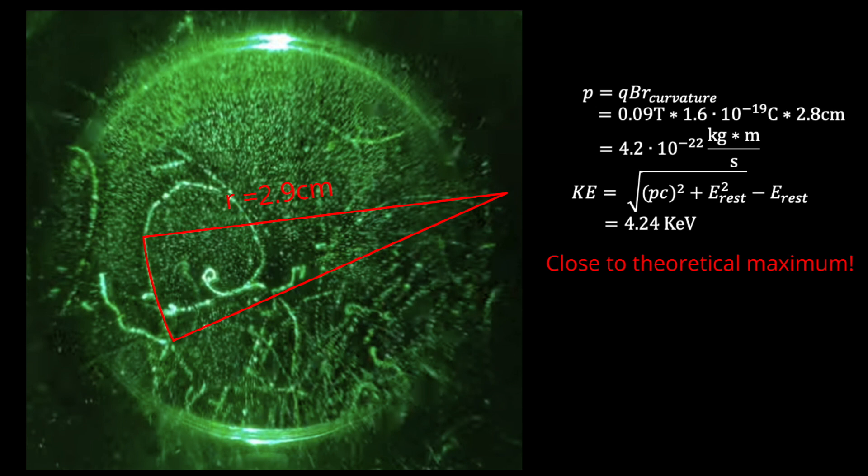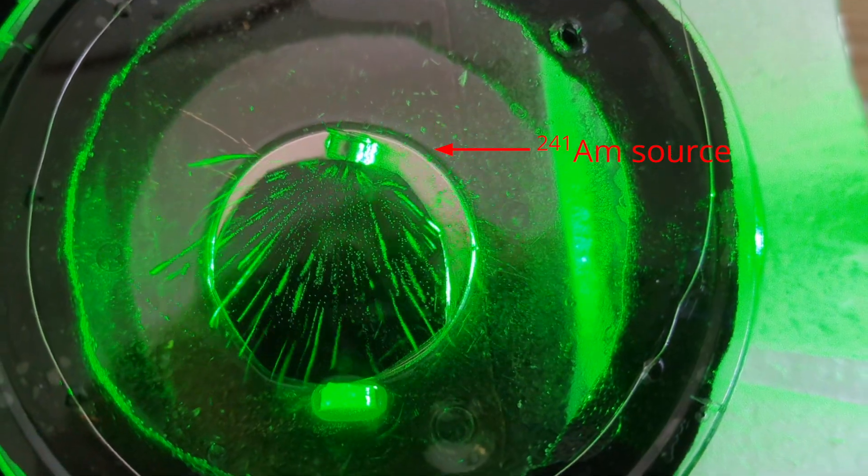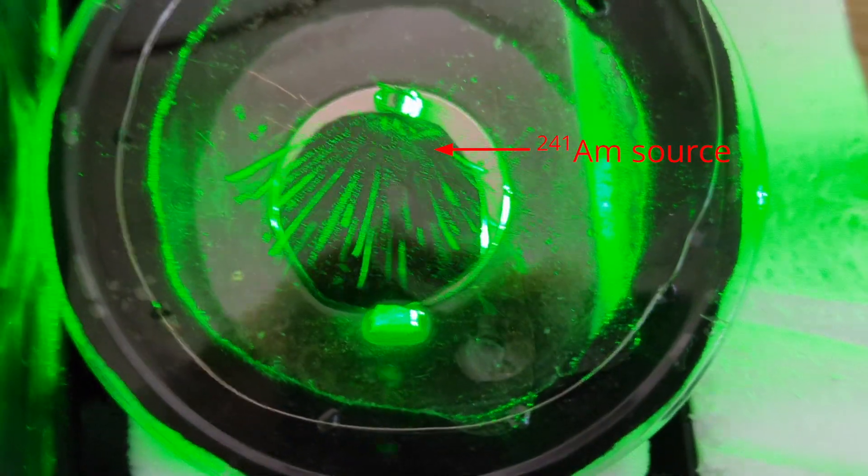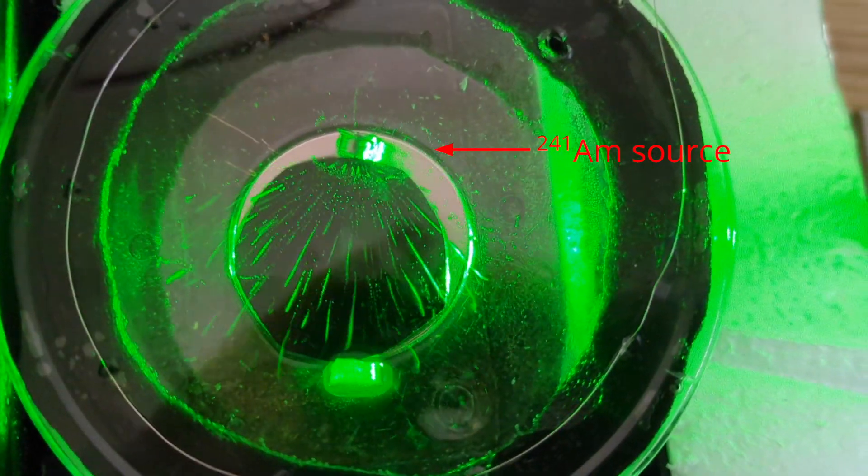The only other positively charged particles we should expect to detect would be protons or alpha particles, which are thousands of times heavier. Here's what an alpha particle source looks like. These trails don't noticeably curve, since the radius of curvature is much larger than the cloud chamber itself.